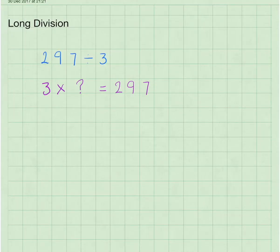In this video we're going to look at long division again and this time the sum is 297 divided by 3. When we've correctly worked that out we'll be able to then say 3 times the answer equals 297 because division and multiplication are the opposite of each other.